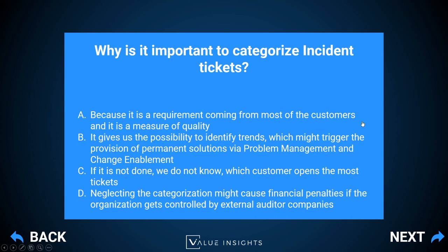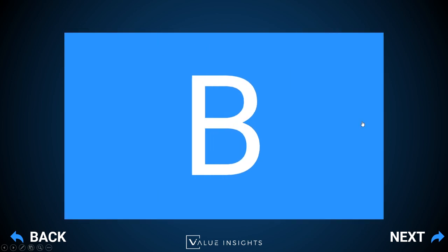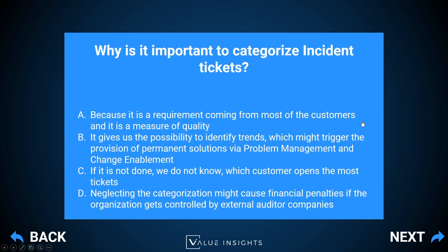Question five: why is it important to categorize incident tickets? The correct answer is B: it gives us the possibility to identify trends which might trigger the provision of permanent solutions via problem management and change enablement. If we categorize incidents, we can run meaningful reporting and identify recurring incidents on the same configuration items, figure out which applications or services are affected repeatedly, run a root cause analysis through problem management, and then open a change request to get it solved for good.